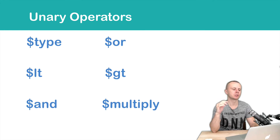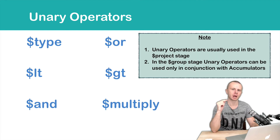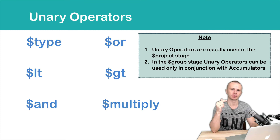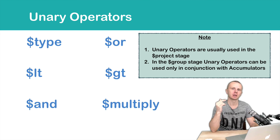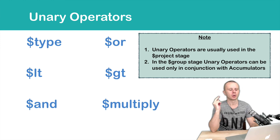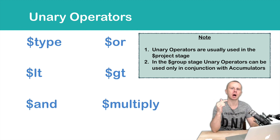There are two important things to remember about unary operators. First, unary operators are usually used in the project stage because they work per document, and the project stage also works per document — it takes each document as input and outputs one document per input. You can add additional fields that use unary operators inside them. Second, you can use unary operators inside the group stage, but only on the value side and in conjunction with accumulators.